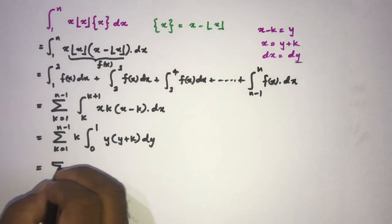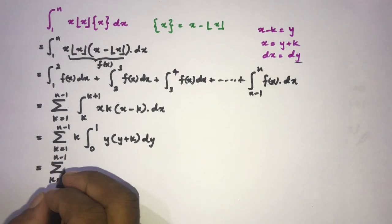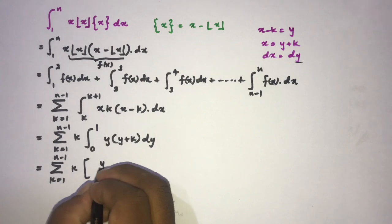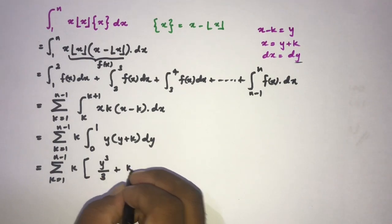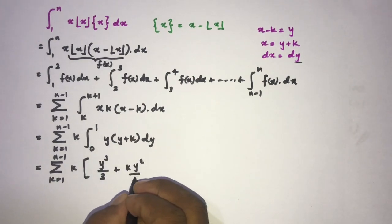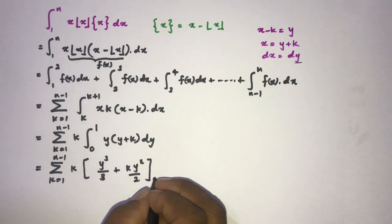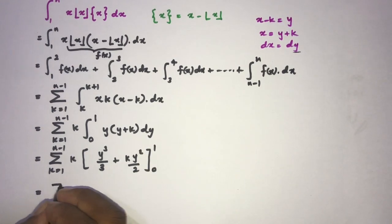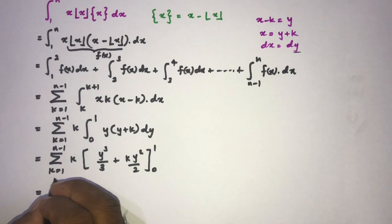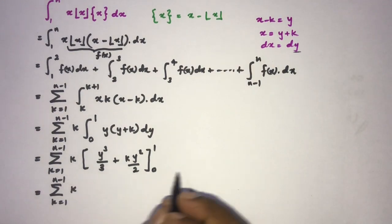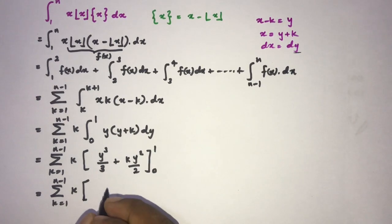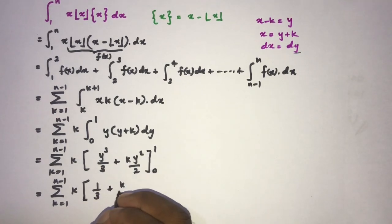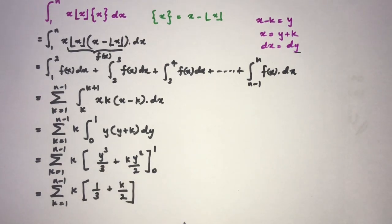Integrating, for k from 1 to n minus 1, we have k times [y³/3 plus k·y²/2] evaluated from 0 to 1. Plugging in the limits, we get k times (1/3 plus k/2), since plugging in 0 gives zero.